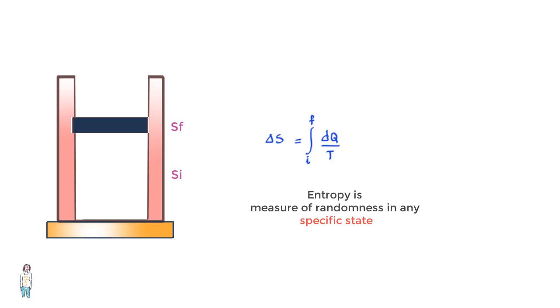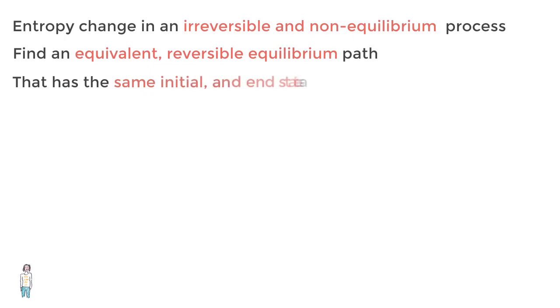While we have been constantly considering reversible processes for calculating entropy changes, we can also measure entropy changes for irreversible non-equilibrium processes. However, the equations we have discussed so far will not be applicable. To find entropy change in an irreversible non-equilibrium process, all we need to do is find an equivalent reversible equilibrium path that starts at the initial state and ends at the final state of the irreversible process for which we are trying to find the entropy change. Once we can establish such a path, we can find the entropy change as well. And again, just to remind you, this calculation would be right since entropy is a state matter and does not depend on what happens in between the initial and the final state.